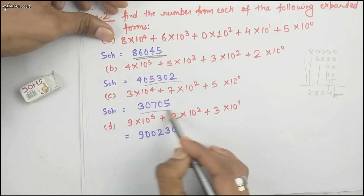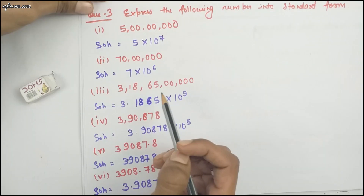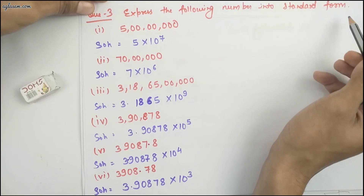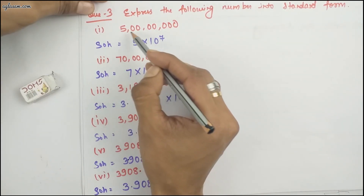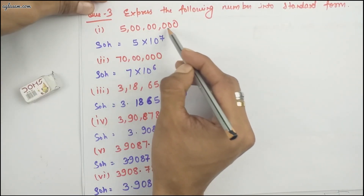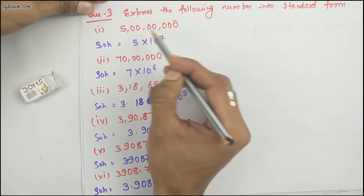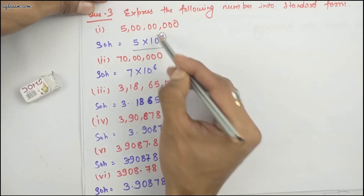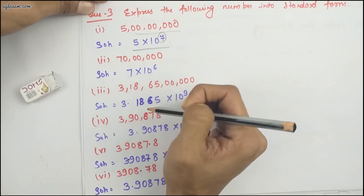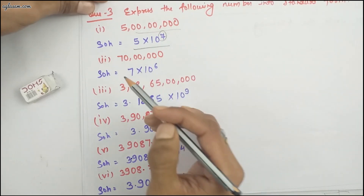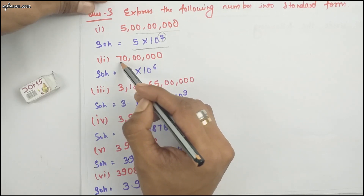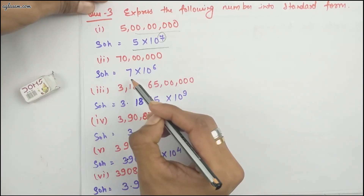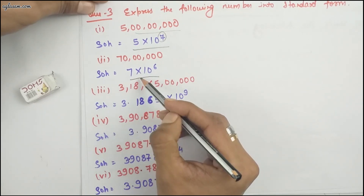Moving to question number 3, it says express the following numbers in standard form. The first part is 51,23,45,67 — there are 7 zeros, so it can be written as 5 into 10 to the power 7. The next number is 71,23,456, so it can be written as 7 into 10 to the power 6. Similarly, solve the other parts and let us know the answers.